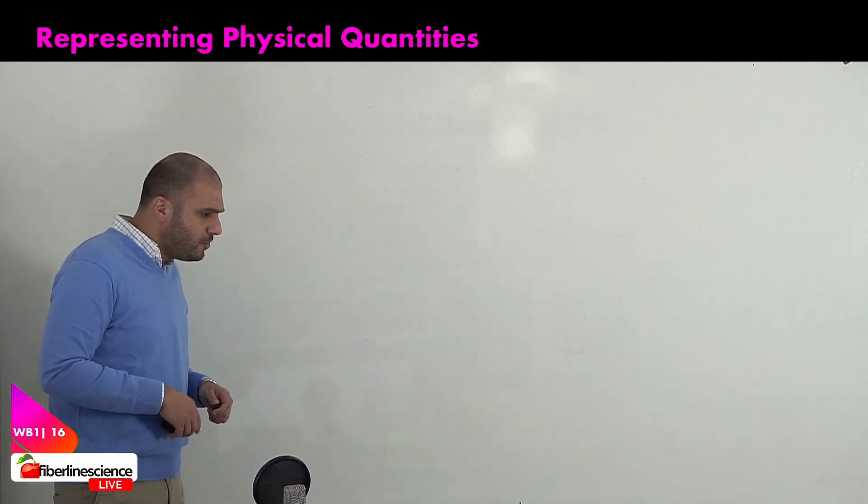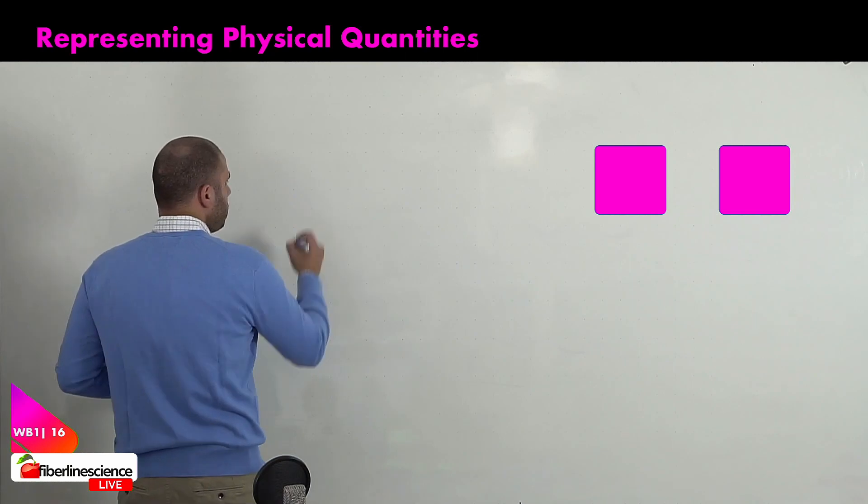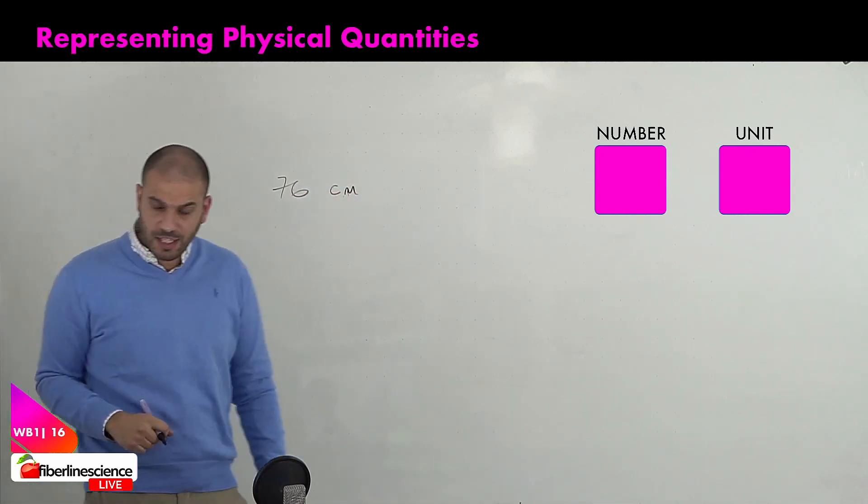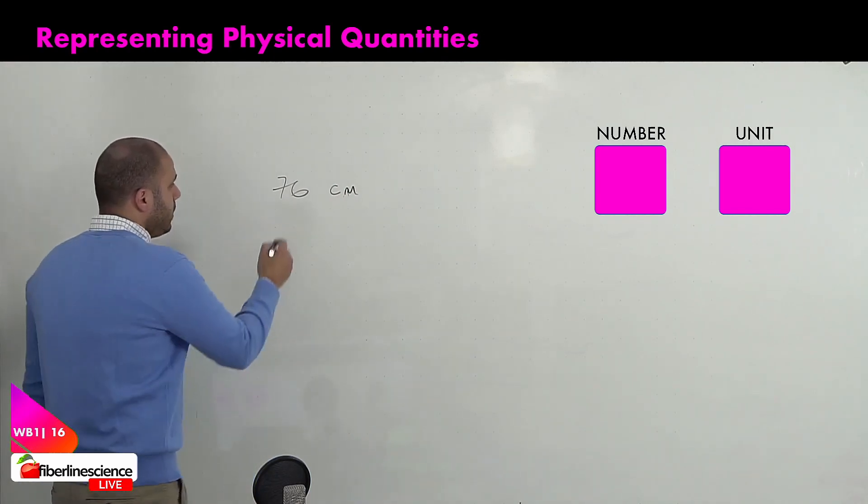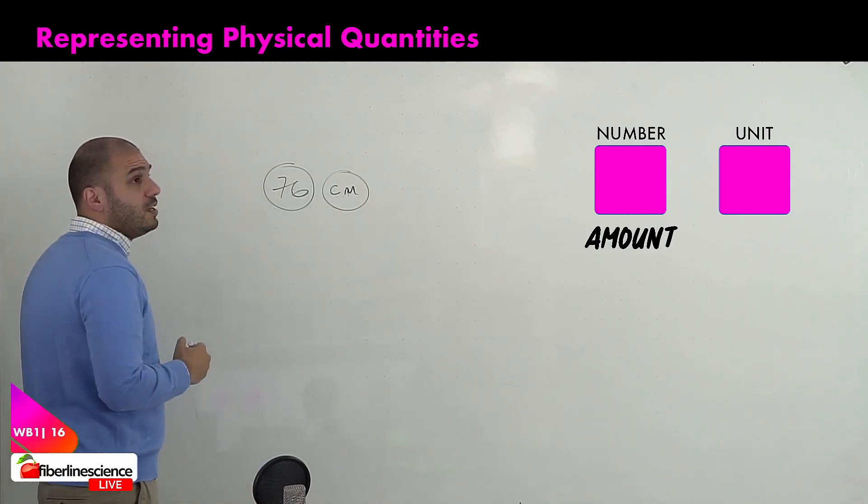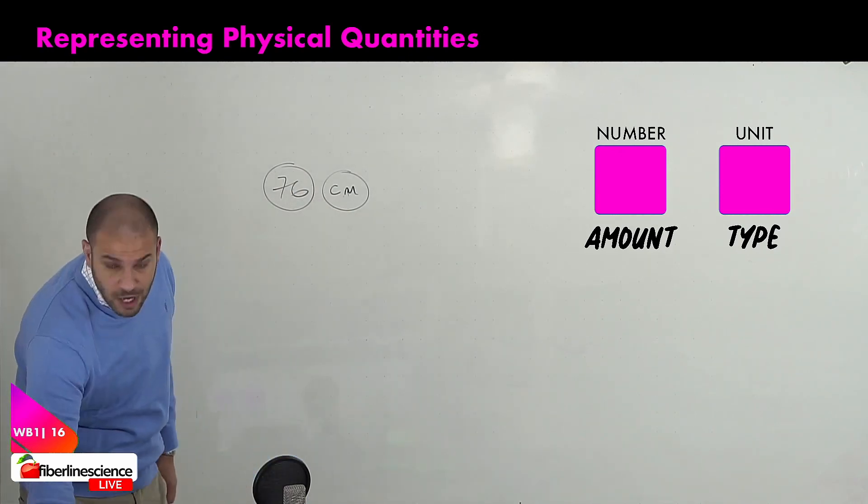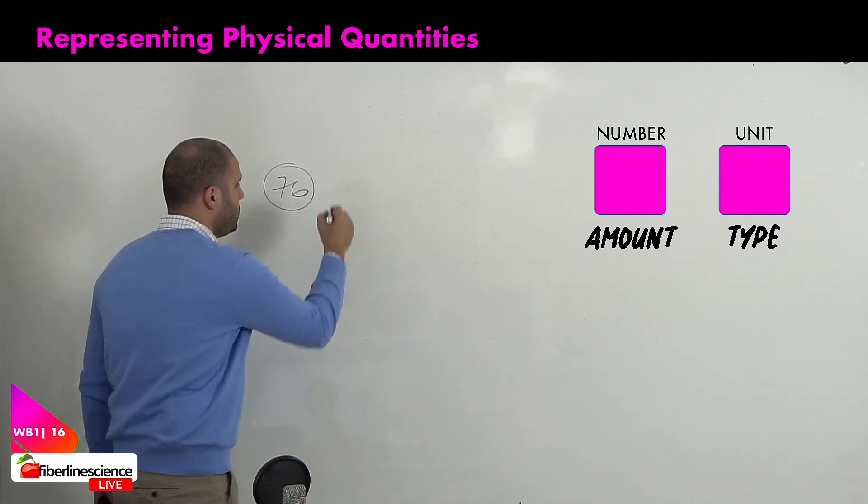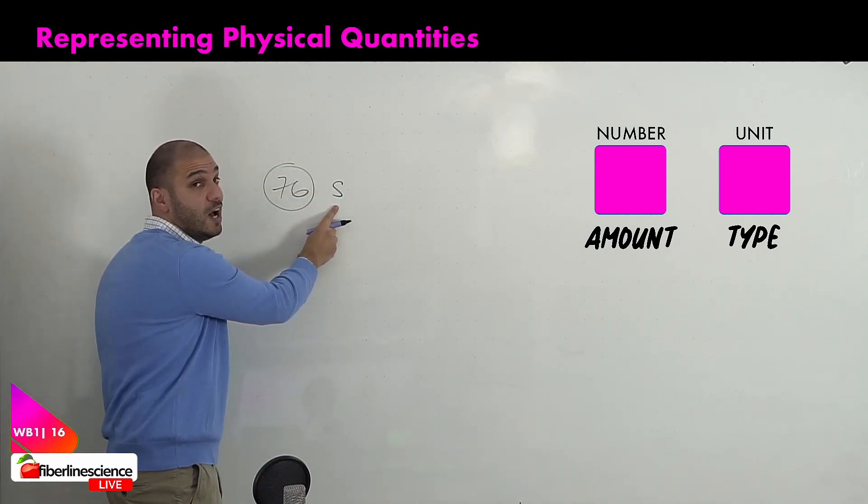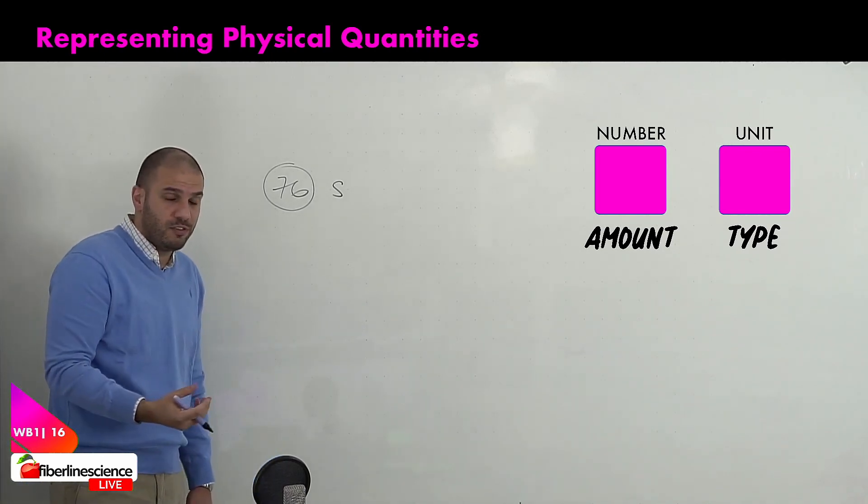So moving on, how do we represent physical quantities? Physical quantities are always represented in two parts. You're given a number and a unit. Let's just assume that this is the height of the desk that is in front of me: 76 centimeters. This number gives me the amount of the quantity and this unit states the type of quantity. Seeing that it is centimeters, I know that it is length. If I just change the units without changing the amount, say, give it as seconds, then I know that this physical quantity, the type of physical quantity is now time. So the unit will change our understanding of what type of physical quantity we're dealing with.